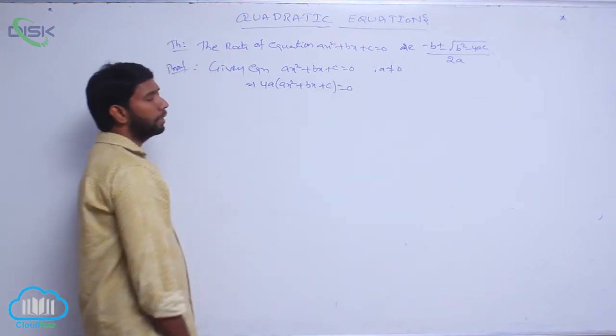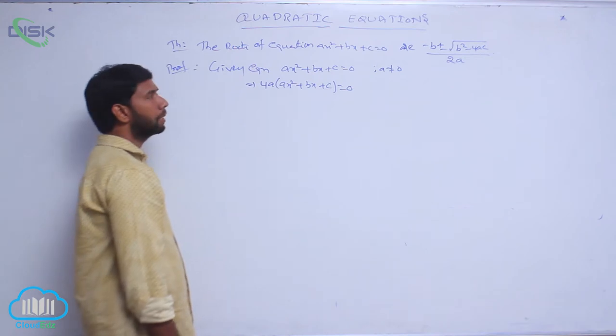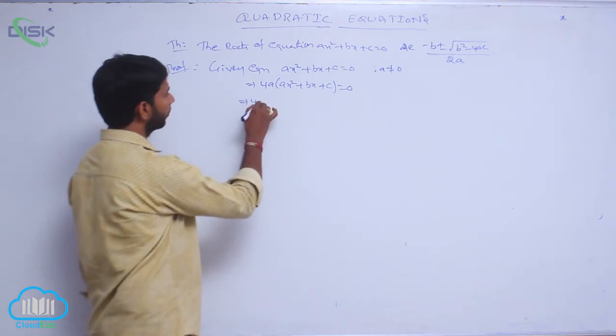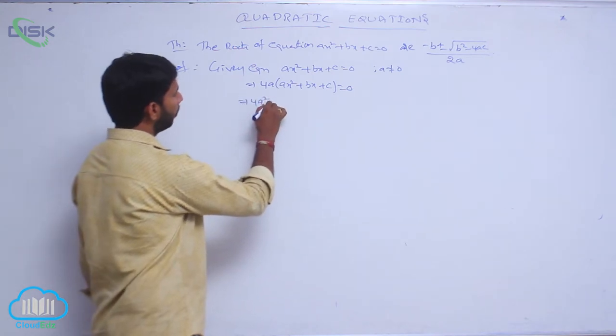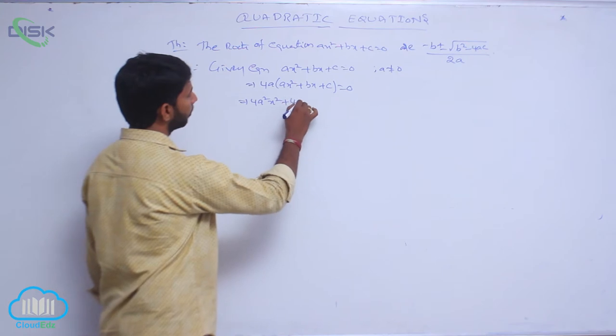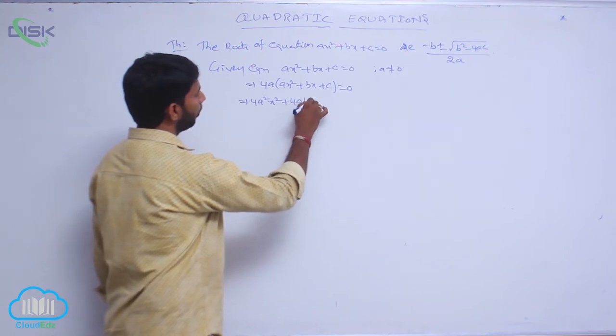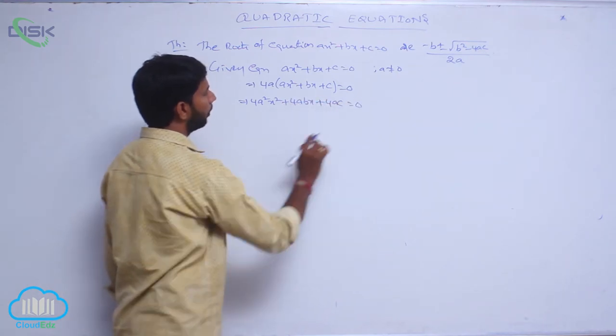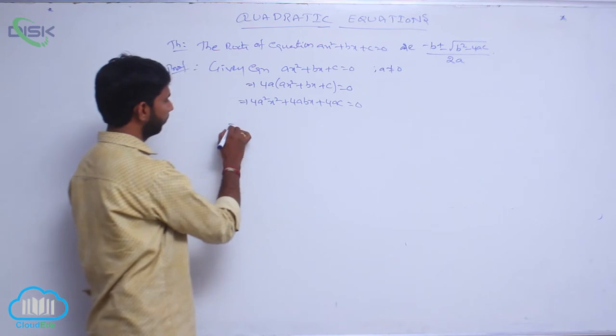Multiplying 4A on both sides: 4A(Ax² + Bx + C) = 0, which gives 4A²x² + 4ABx + 4AC = 0.